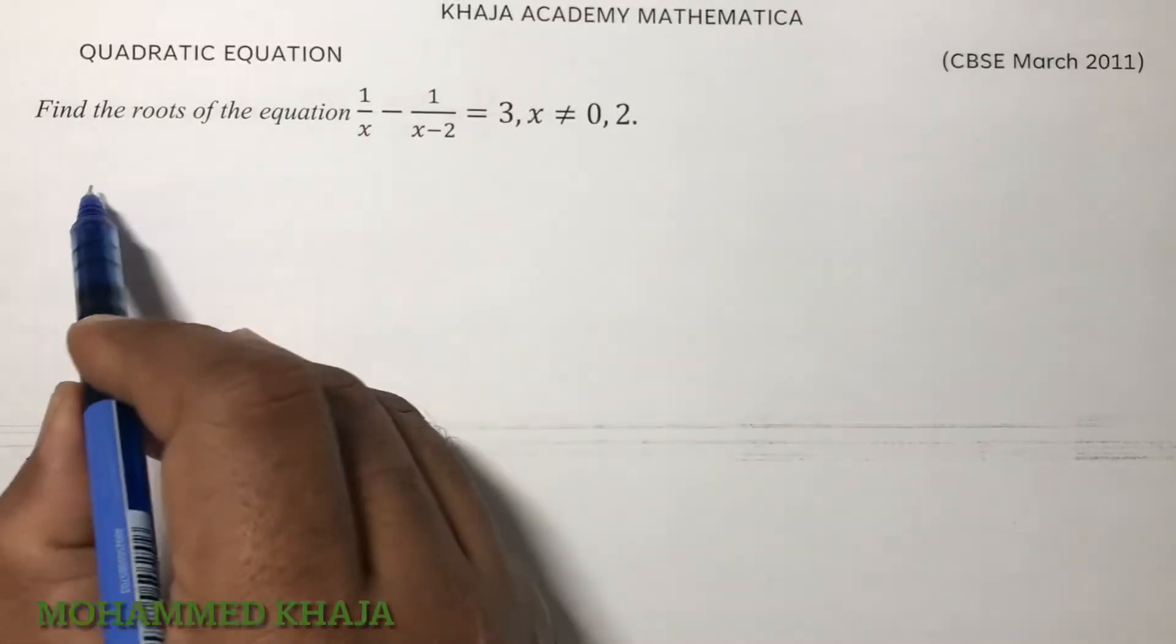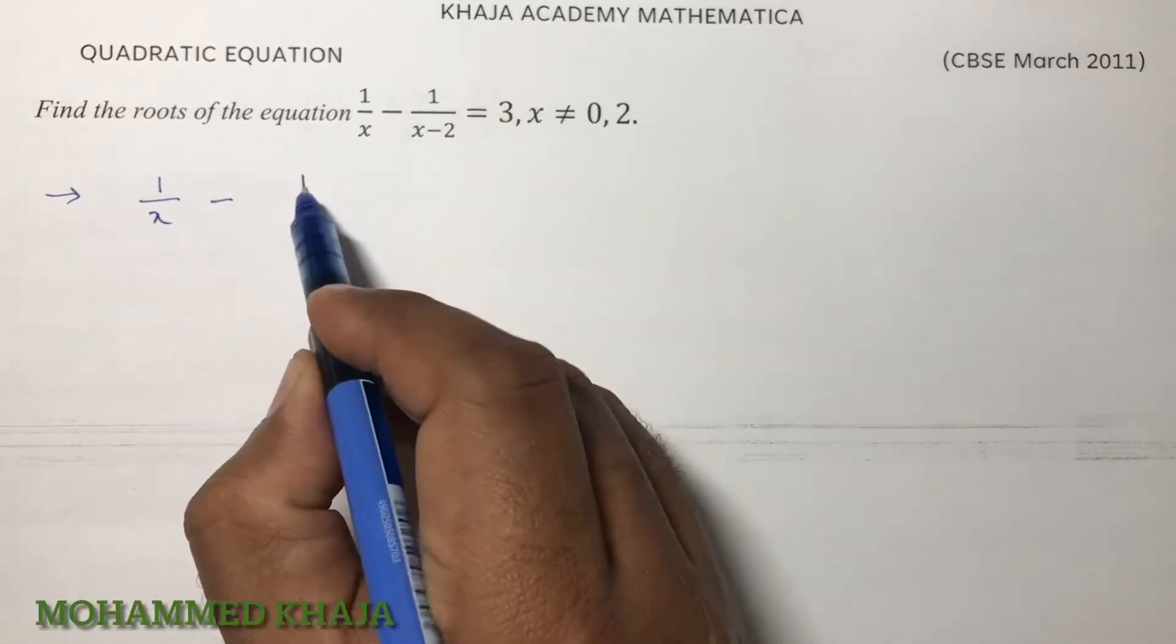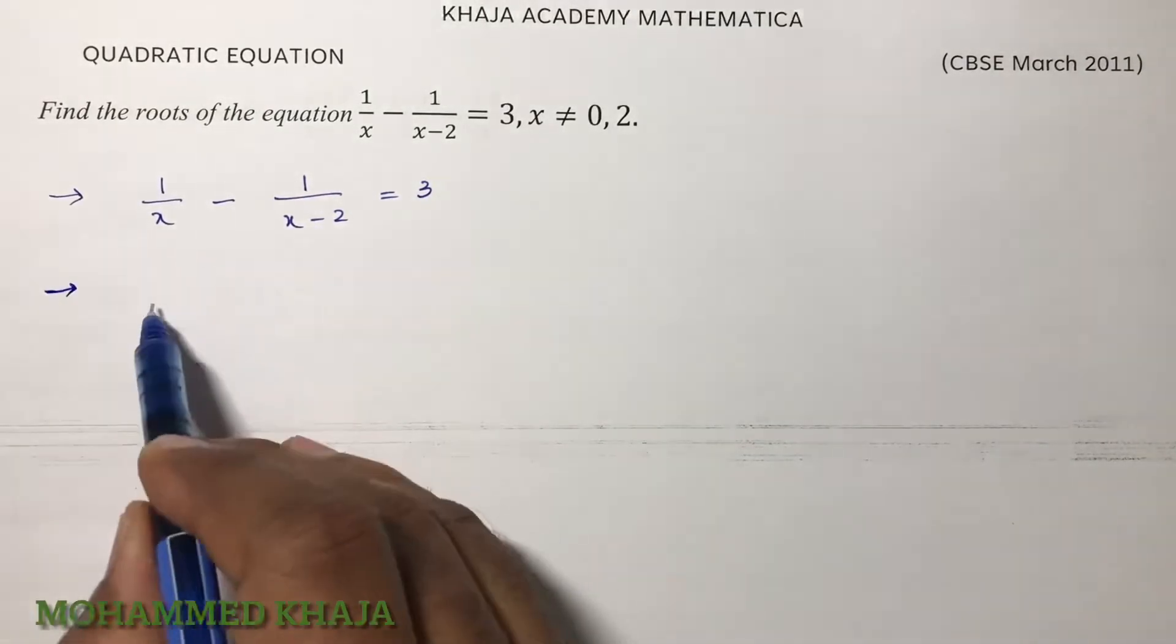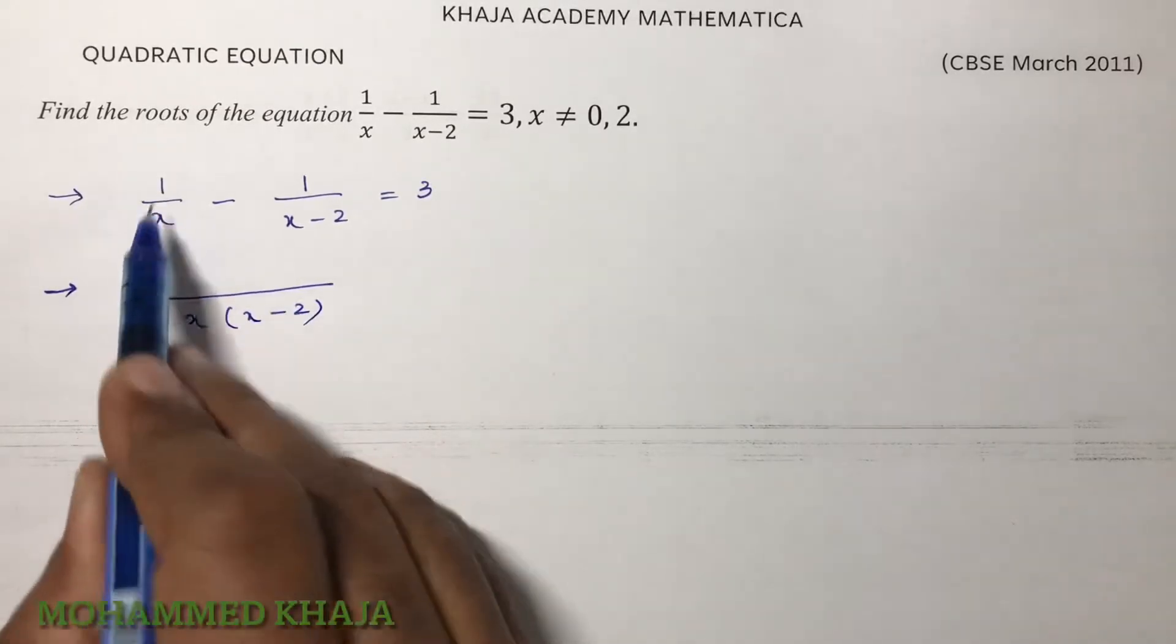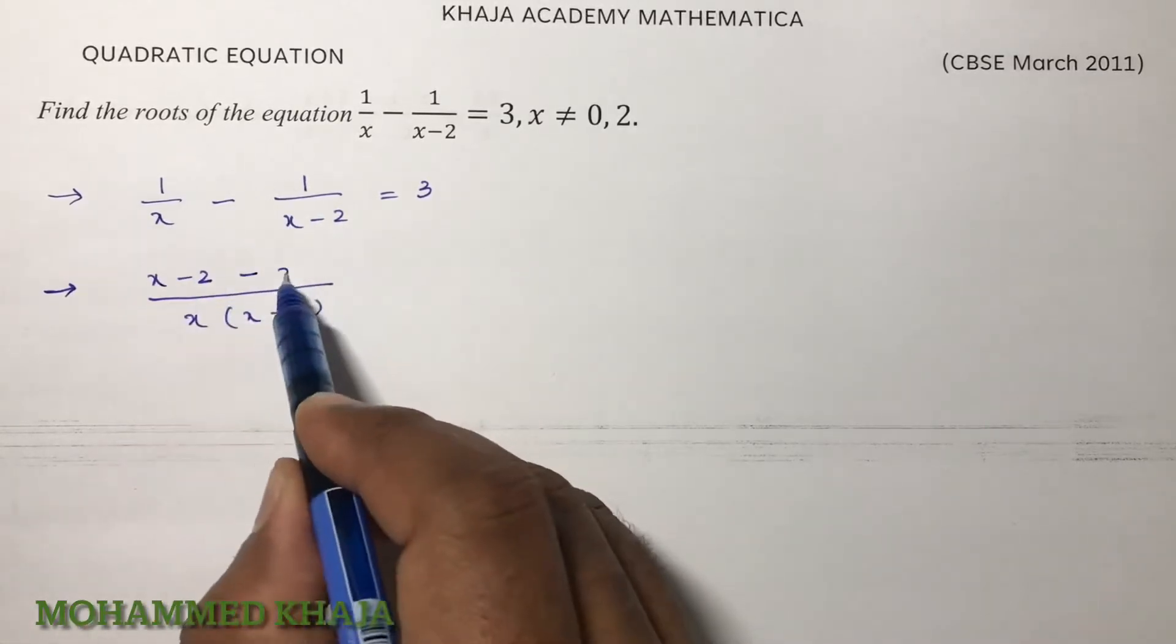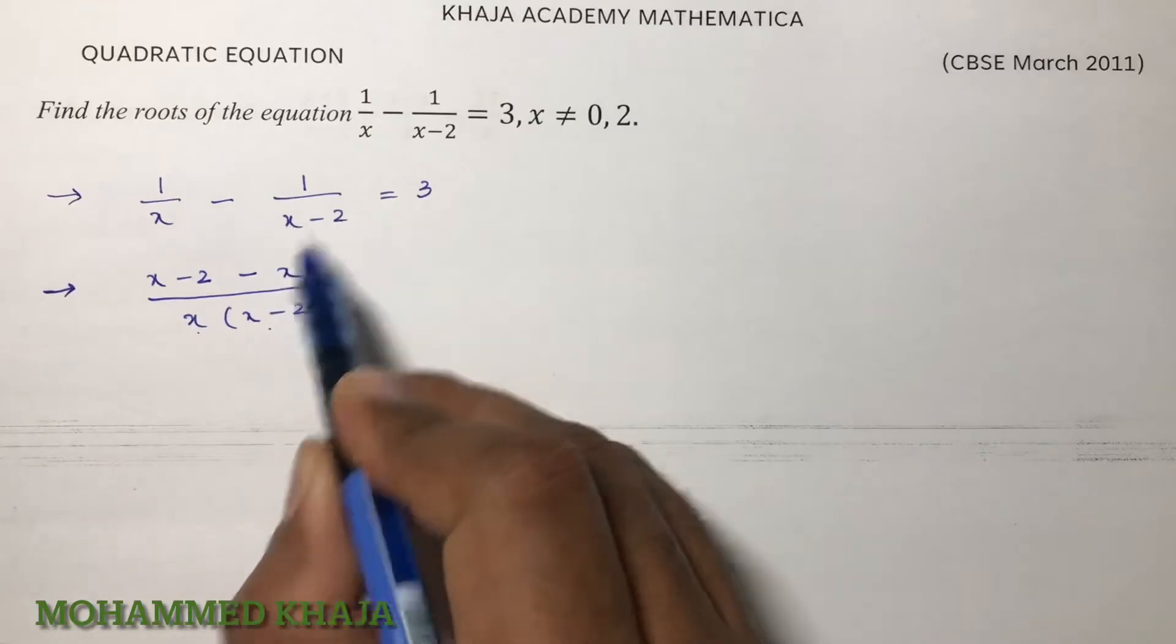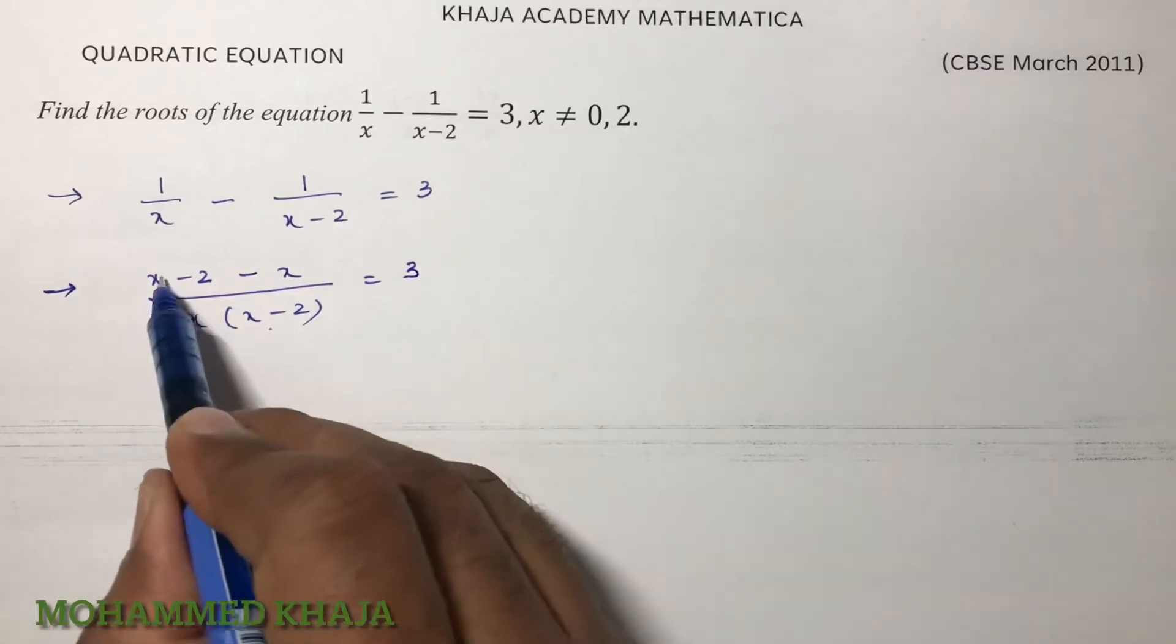So we need to find the roots of 1/x - 1/(x-2) = 3. Now here LCM is x(x-2), so if I multiply, here I have x so x-2 I will multiply here, and here I have x-2 so x I will multiply for this equals 3.